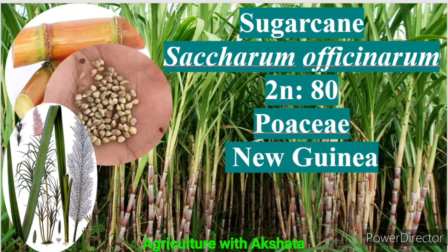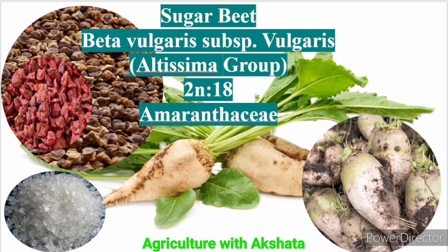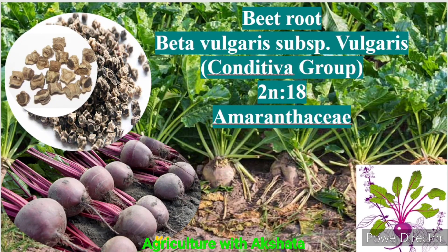Now let us see some sugar crops. Sugarcane: Saccharum officinarum, 2n = 80, Poaceae family, origin New Guinea. The flower or inflorescence of sugarcane is known as an arrow. Sugar beet and beetroot belong to the same family and same scientific name but different groups. Sugar beet: Beta vulgaris subsp. vulgaris, 2n = 18, Amaranthaceae family, mainly used for sugar extraction. Beetroot: Beta vulgaris subsp. vulgaris, 2n = 18, Amaranthaceae family.